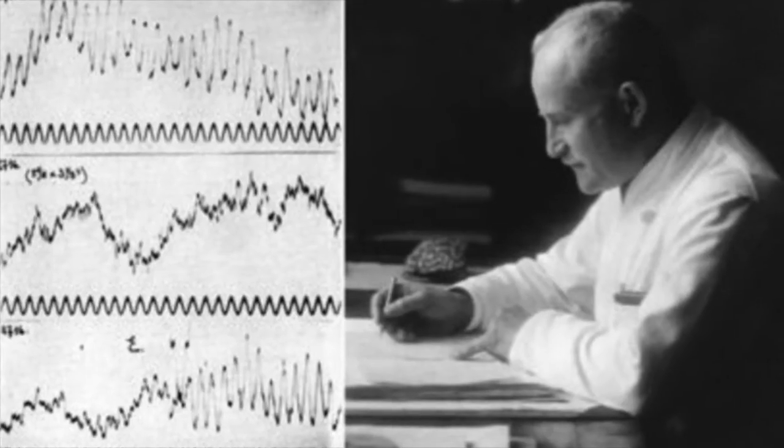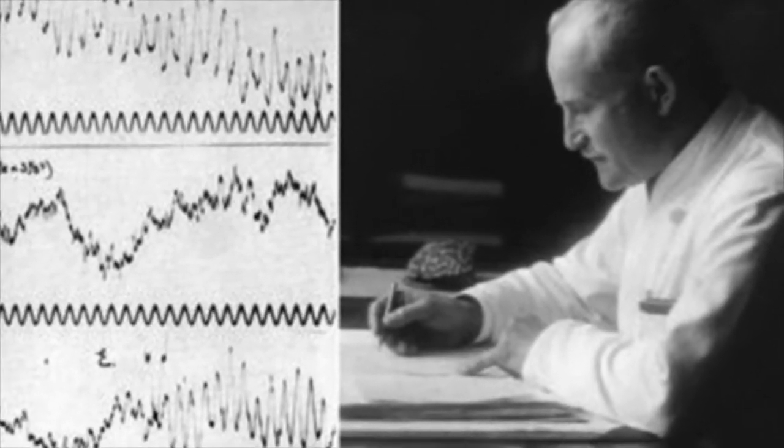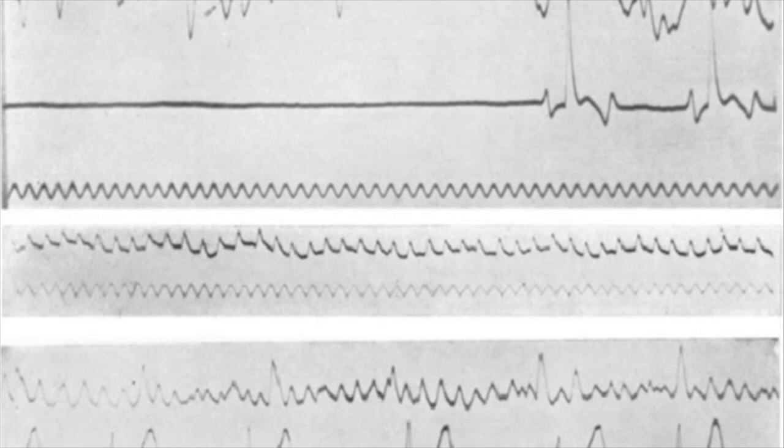The EEG was invented in 1929 by Hans Berger, and works by passively measuring and recording the net electrical activity happening in the brain, using electrodes placed above different brain regions.